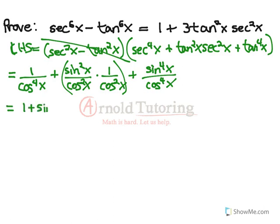It's 1 plus sin²x plus sin⁴x all over cos⁴x. Okay, so that's not too bad.